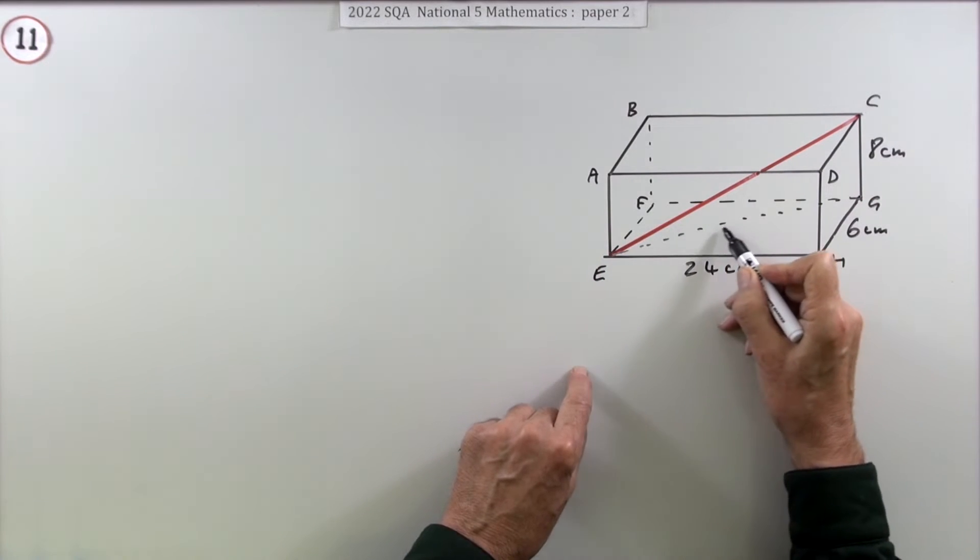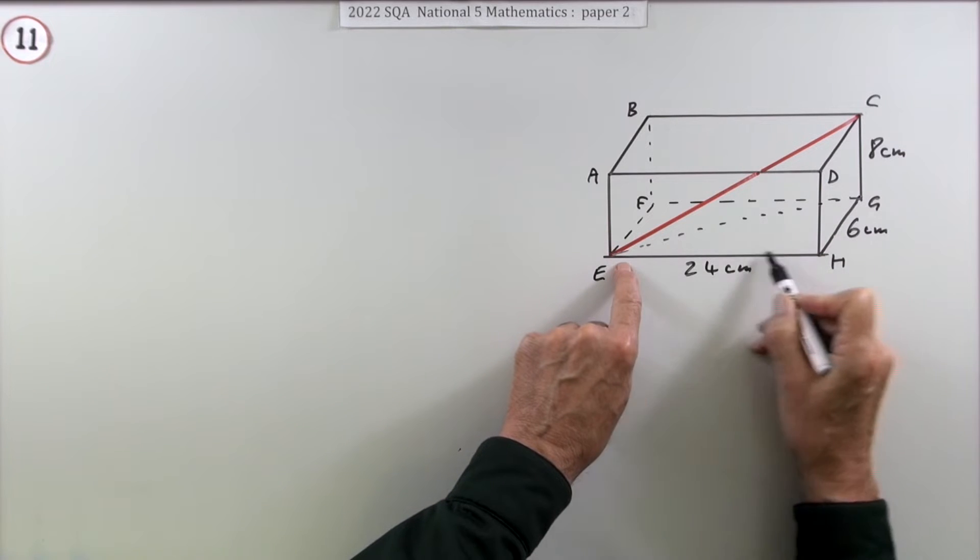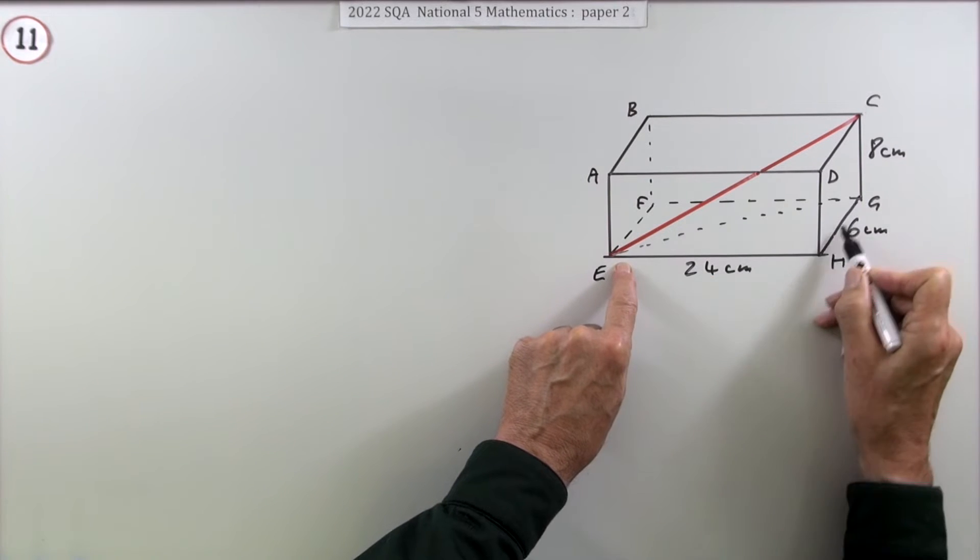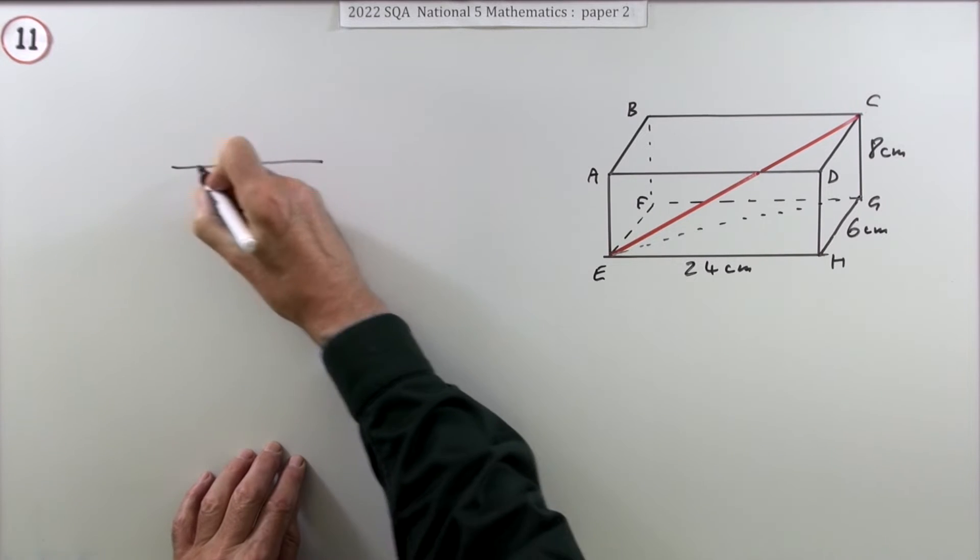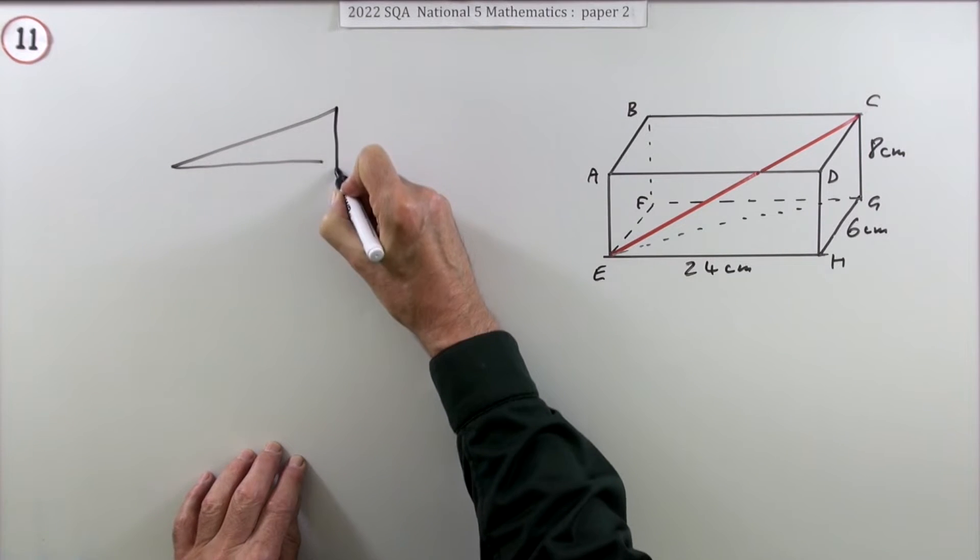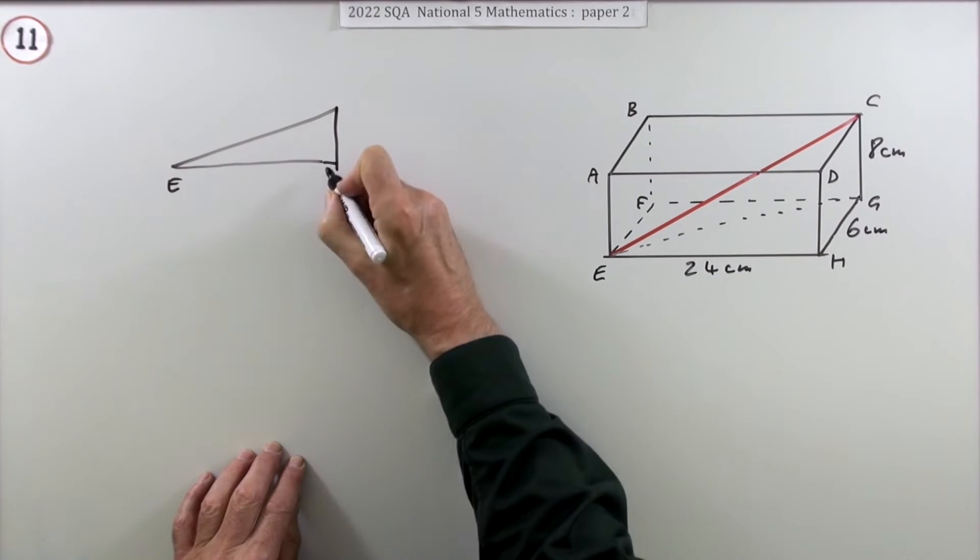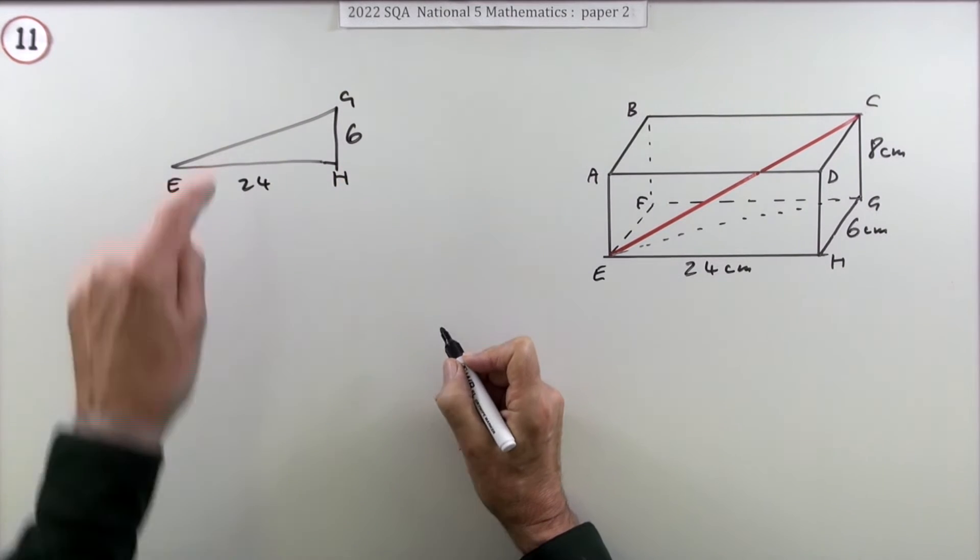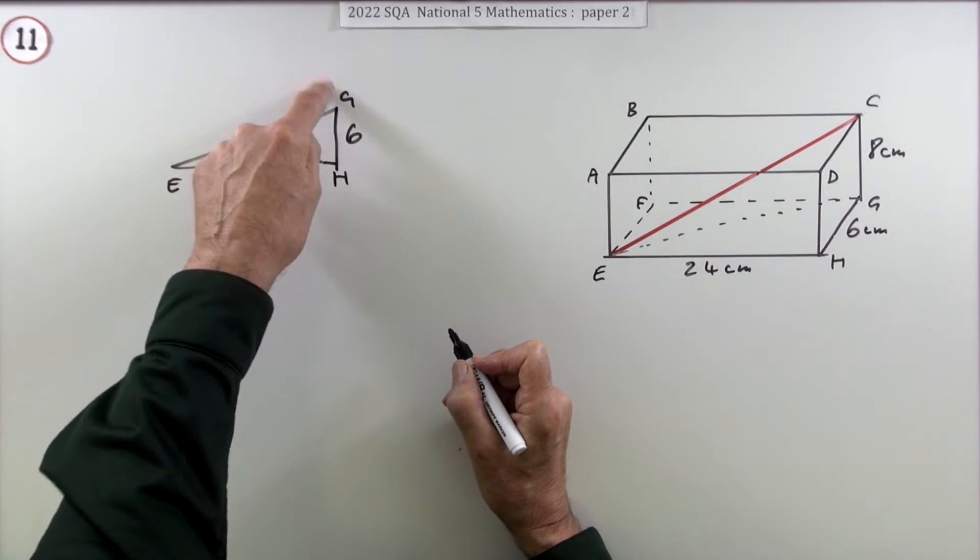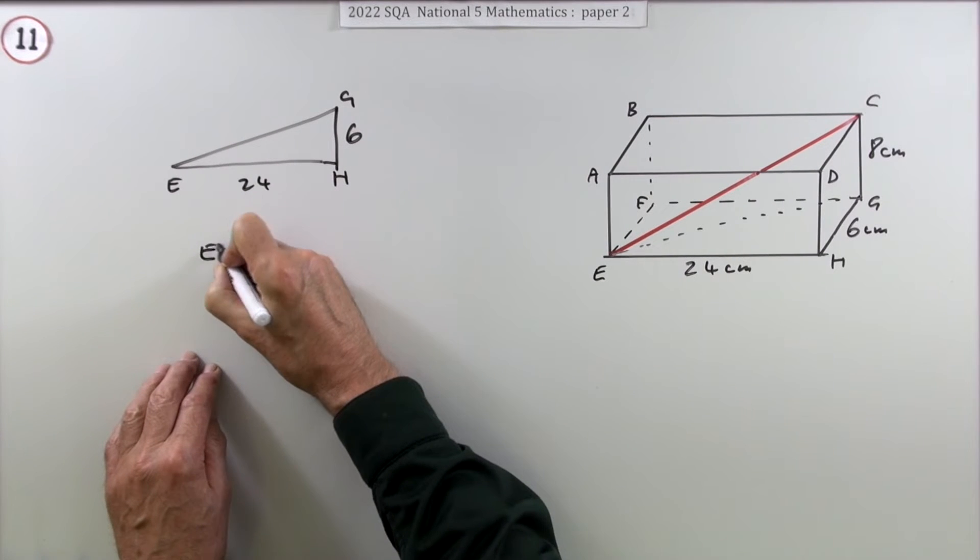Then you could work out the length of EG from the horizontal base triangle EHG. So you could work it out this way: if you work along the base from E to H to G, that's a 24 and a 6, you could use Pythagoras to work it out.